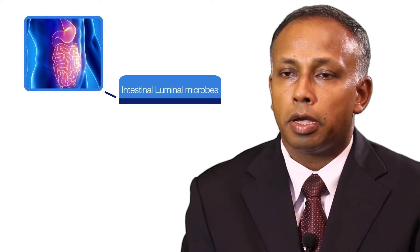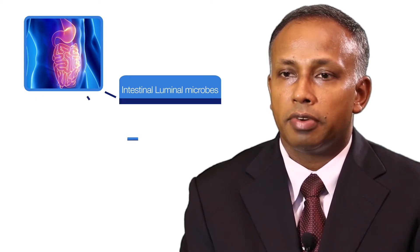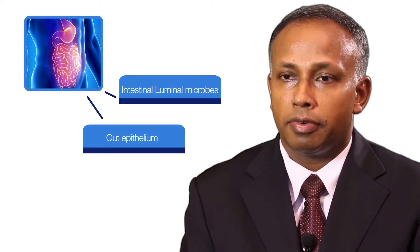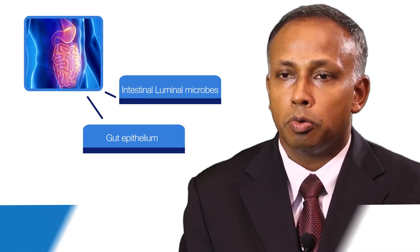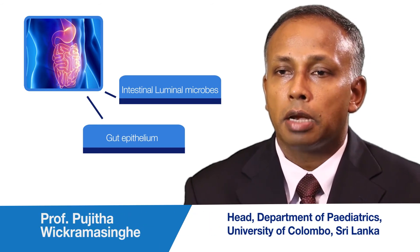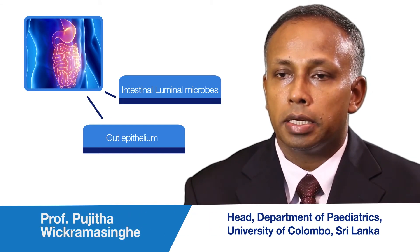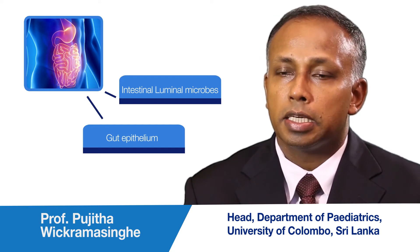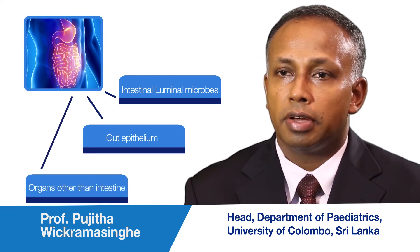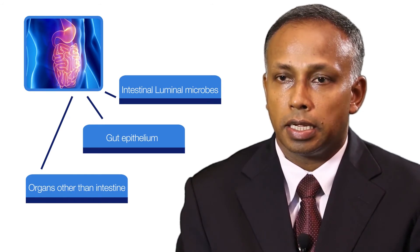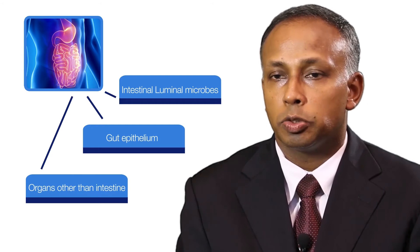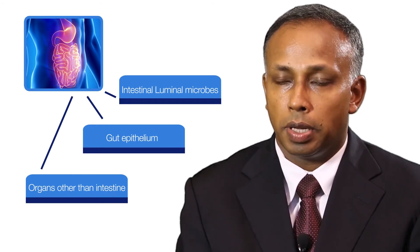At level one, probiotics create a healthy micro-ecosystem within the gut. The second level is at the mucosal or epithelial level, where they help in establishing a healthy epithelium and mucosal system, thus strengthening the gut mucosal immune barrier in the individual. The third level is at a distant level, affecting organs other than the intestines, such as the liver, and sometimes even the brain.